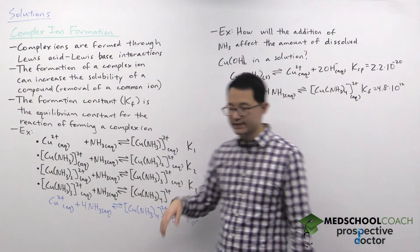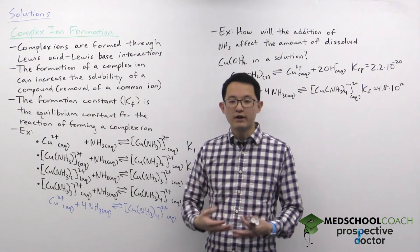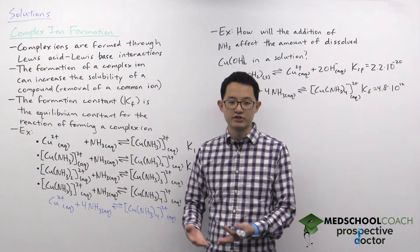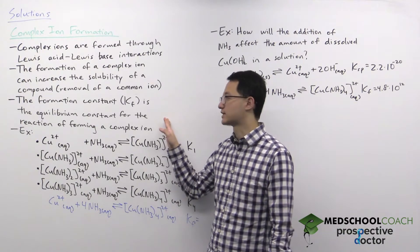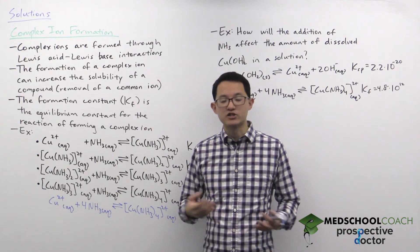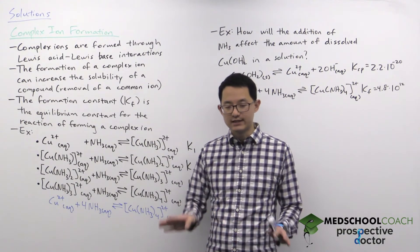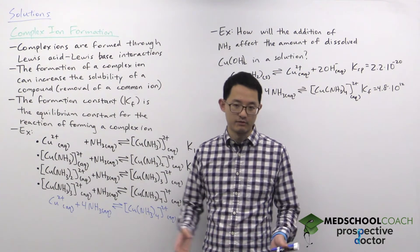Now the next thing is when you form a complex ion there is a reaction for that formation. The equilibrium constant for this reaction of forming a complex ion is what we call the formation constant. It's not anything different from a regular equilibrium constant.